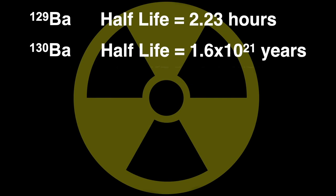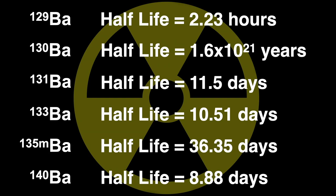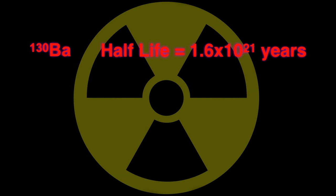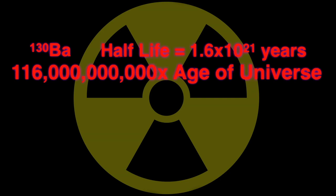Of the radioactive isotopes of barium, these are the longest-lived — the ones with half-lives over one hour. Now, one of those seven so-called stable isotopes is actually very very slightly radioactive with a tremendously long half-life: barium-130 has a half-life 116 billion times the age of the universe, so it's essentially stable.